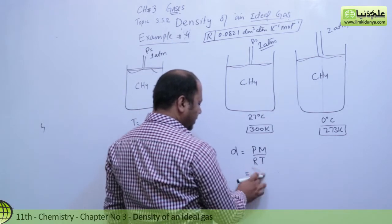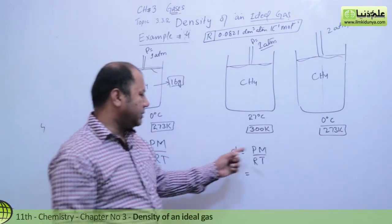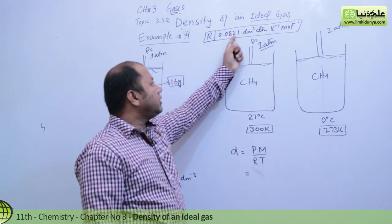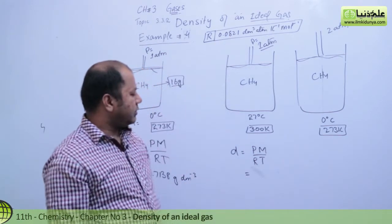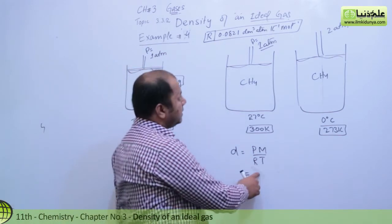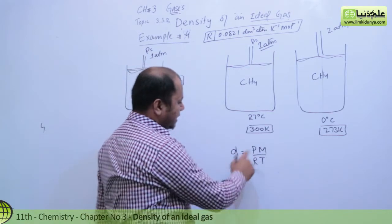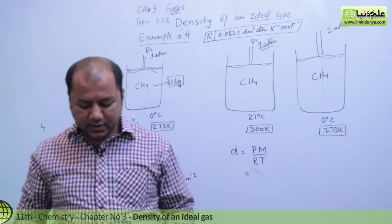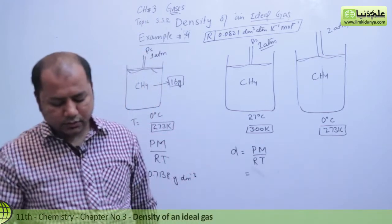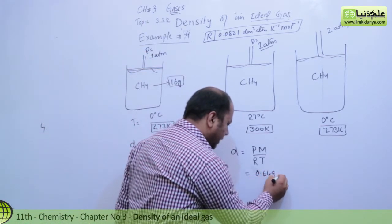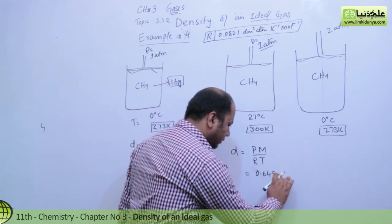Pressure is 1 atm, molecular mass is 16. Multiply those two. General gas constant is 0.0821 decimeter cube atm per mole per Kelvin, and temperature is 300 Kelvin. We place these values and get 0.649 grams per decimeter cube.